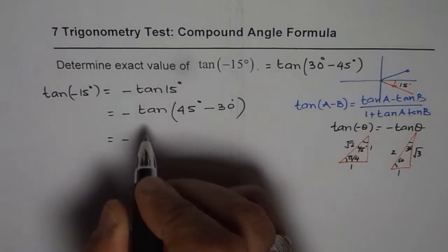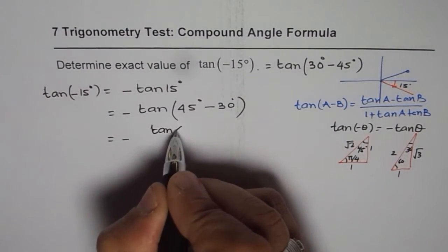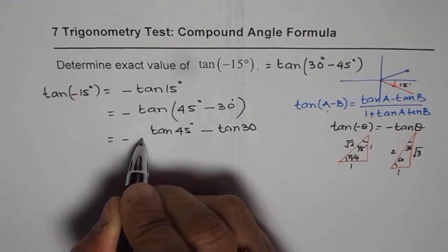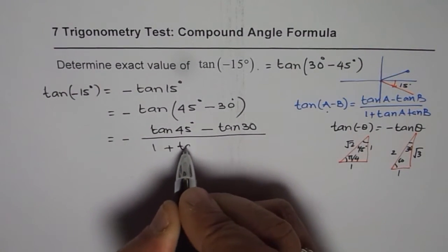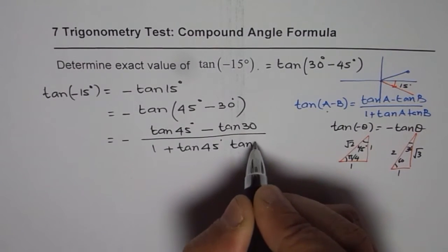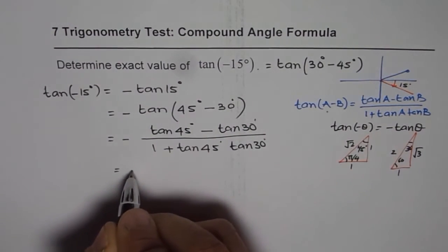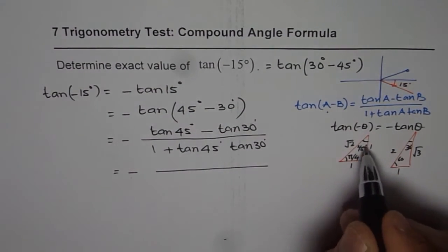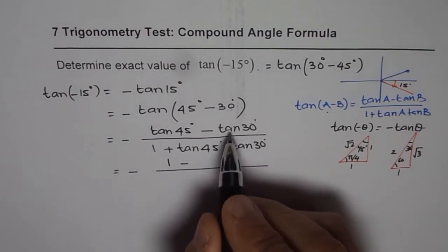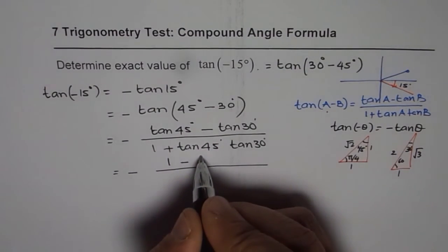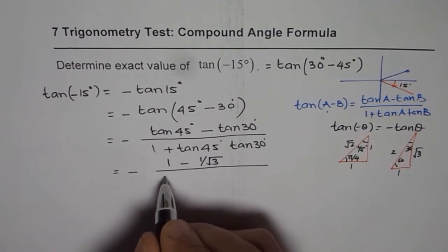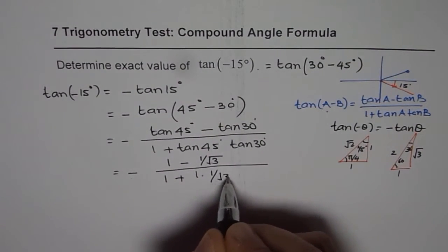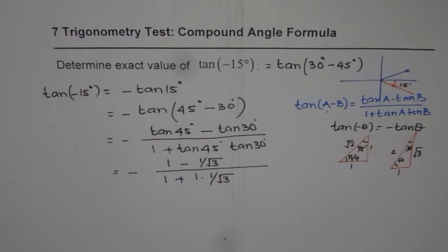Now we know the formula gives us: minus of [tan 45° − tan 30°] divided by [1 + tan 45° · tan 30°]. Substituting the values — it is important to keep the negative sign outside — tan 45 is 1, and tan 30 is 1 over square root 3. So the numerator becomes 1 minus 1 over square root 3, and the denominator becomes 1 plus 1 times 1 over square root 3, giving square root 3 in the denominator.